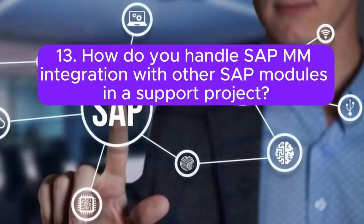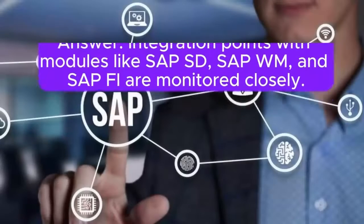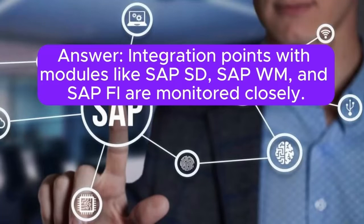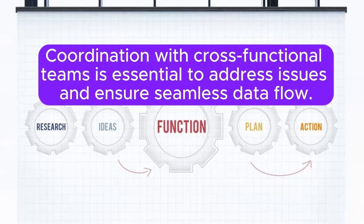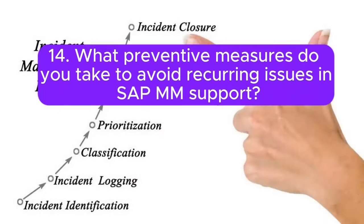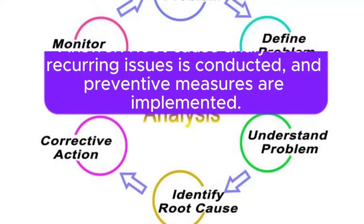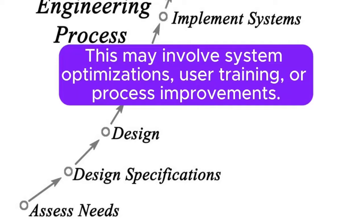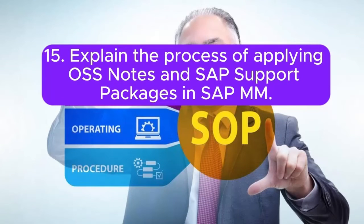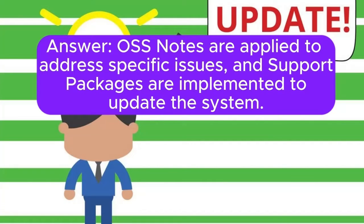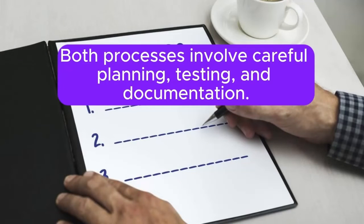Question 13: How do you handle SAP MM integration with other SAP modules in a support project? Integration points with modules like SAP SD, SAP WM, and SAP FI are monitored closely. Coordination with cross-functional teams is essential to address issues and ensure seamless data flow. Question 14: What preventive measures do you take to avoid recurring issues in SAP MM support? Root cause analysis of recurring issues is conducted, and preventive measures are implemented. This may involve system optimizations, user training, or process improvements. Question 15: Explain the process of applying OSS notes and SAP support packages in SAP MM. OSS notes are applied to address specific issues, and support packages are implemented to update the system. Both processes involve careful planning, testing, and documentation.